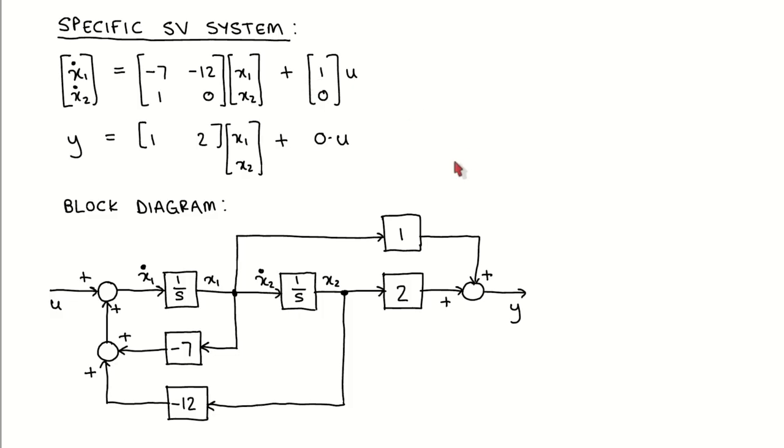To draw the block diagram from the state variable equations, I usually start with the integrators. I draw the same number of integrators as the number of states. I label the output of the integrators as the states and the inputs of the integrators as the corresponding state derivatives. I also draw the input signal U and the output signal Y. Then I simply go line by line through the state variable equations and draw in the necessary signal lines, gain blocks and summation blocks.